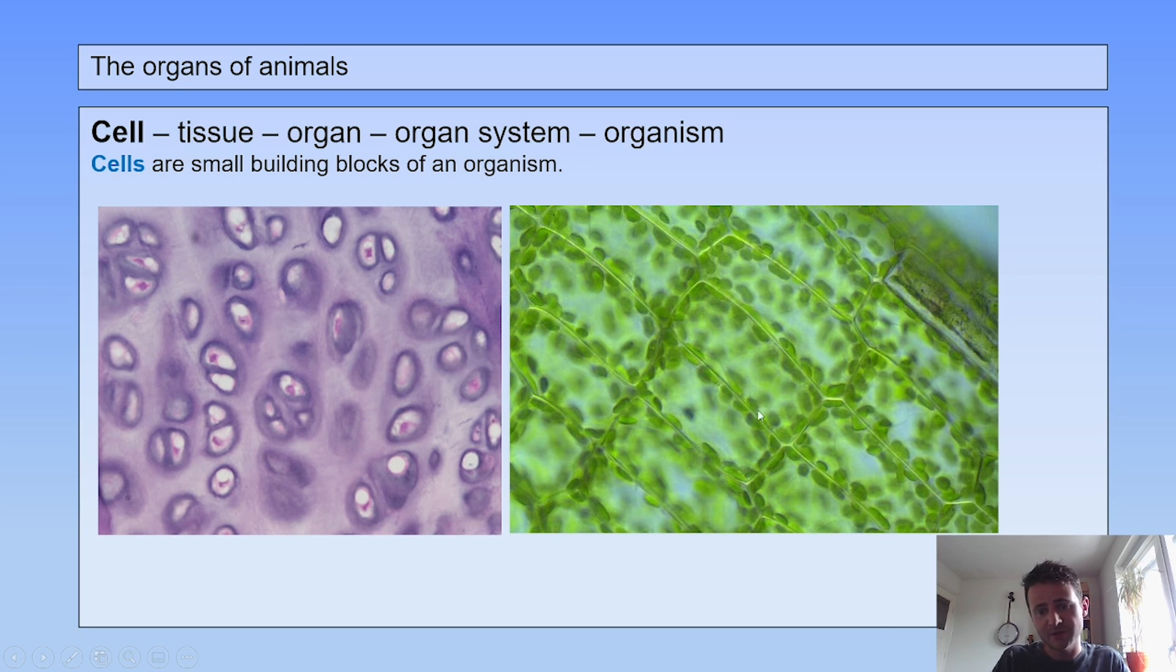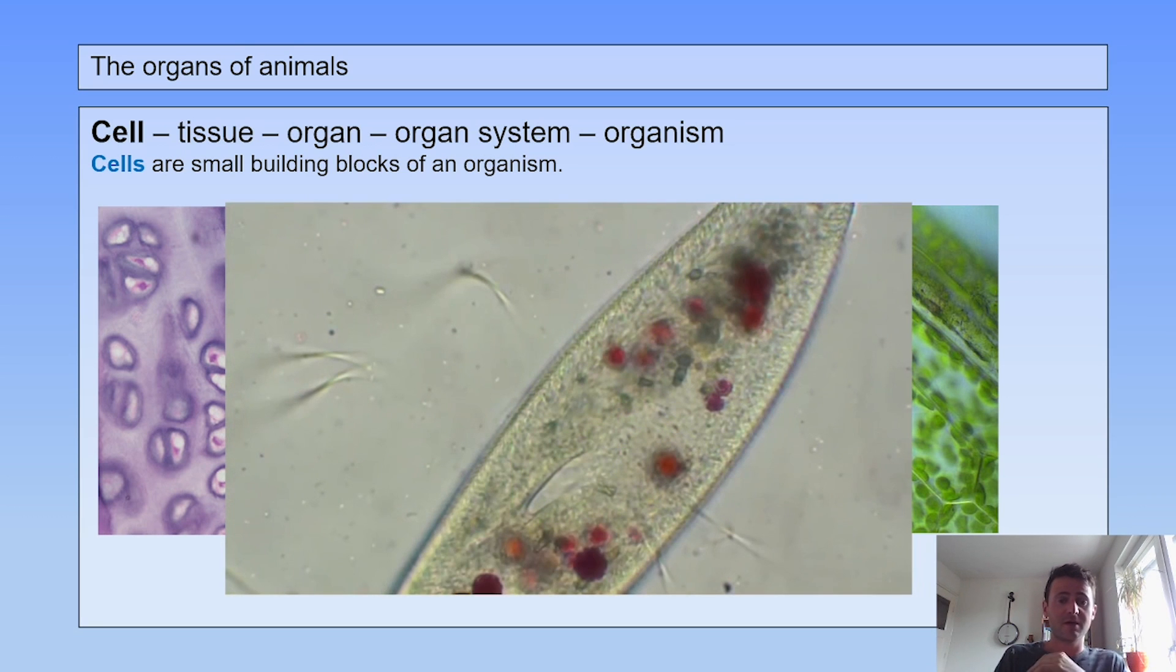This is one cell. You can see the chloroplasts within the cell. Here you see one cell in the middle of the nucleus and the membrane surrounding it. These are the building blocks of an organism, and we are built of millions of these cells, but there are also organisms that just contain one cell, these are called single-celled organisms.